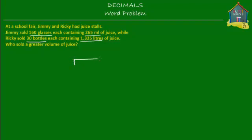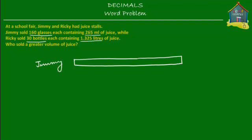Let's first make a model for the volume of juice that Jimmy sold. Jimmy sold 160 glasses of juice. This block represents the volume of juice that Jimmy sold. If this is one glass, then its volume is equal to 265 milliliters. So each of these little units is 265 milliliters — glass number 1, glass number 2, glass number 3, 4, and so on, up to glass number 160. Each of these is 265 ml.